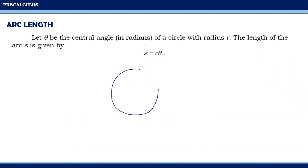Suppose that we have a circle here with the center here, with theta as the central angle wherein the measurement of this angle is in radian. The arc length is the length of this subtended arc by theta, represented by s, while the radius is represented by r. Meaning, if we are solving for the distance or length of this subtended arc, we simply multiply the measure of the radius and the measure of theta in radian.